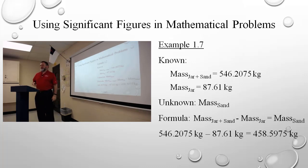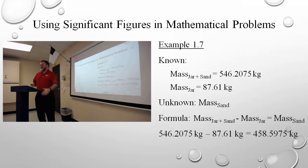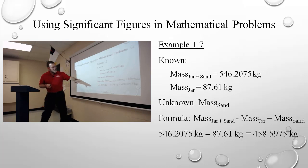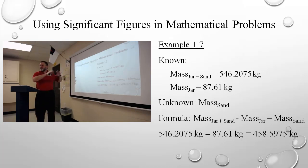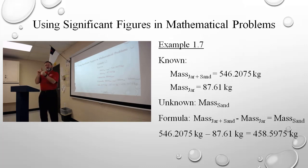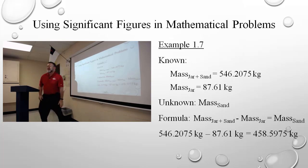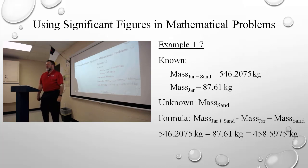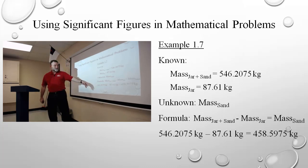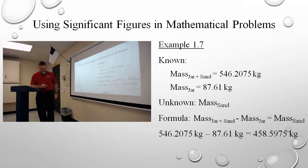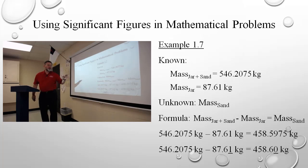Is that your answer? No. That's not your answer. Your calculator is not as smart as you are — your calculator thinks every digit is significant. Look at the first number: 546.2075 kilograms. How precise is that number? It's the tenths, hundredths, thousandths, ten-thousandths place — that's how precise that first number is. The second number, 87.61, is only precise to the hundredths place. So, since this is the ten-thousandths place and this is to the hundredths place, which is the least precise? The hundredths place. So my answer can only go to the hundredths place.